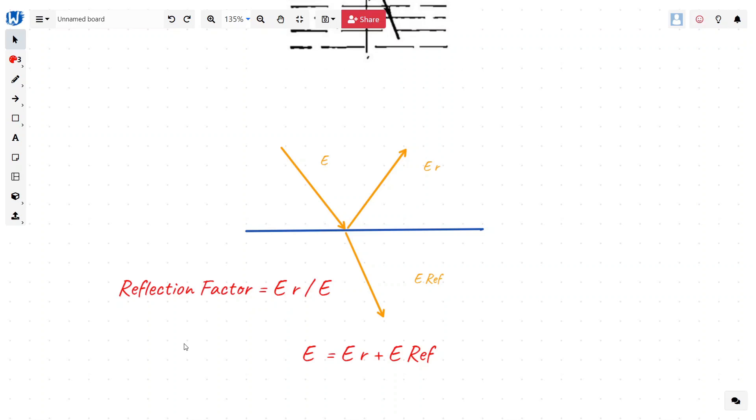However, while another condition remains constant and only the angle of incidence is changed, we can see and find from the experiment a table like this.